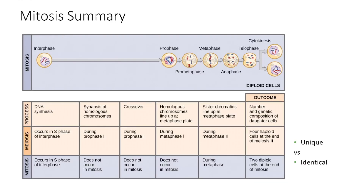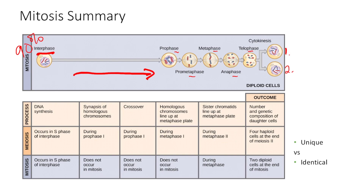To summarize: 90% of the time a cell is in interphase, but then it prepares for mitosis. The steps of mitosis are prophase, prometaphase, metaphase (chromosomes in the middle), anaphase (sisters pulled apart), and telophase (everything comes back together), followed by cytokinesis — splitting of the cytoplasm — resulting in two daughter cells. DNA synthesis happens in the S phase, sister chromatids line up during metaphase, and we end up with two diploid daughter cells — each with 46 chromosomes — that are genetically identical.